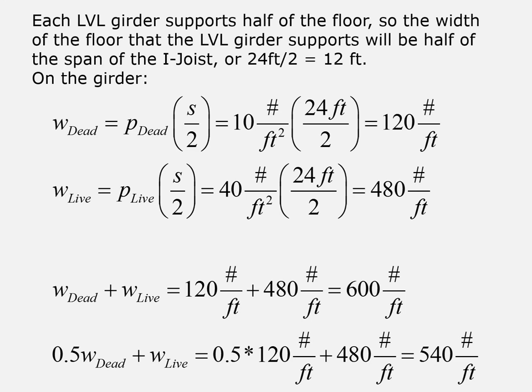And we end up with w_dead = 120 pounds per foot and w_live = 480 pounds per foot. Now in our equations for shear and for moment we need the total load w_dead plus w_live, and then for deflection we need half of w_dead plus w_live. So w_dead plus w_live is 120 plus 480 which comes out to be 600 pounds per foot and then to get the appropriate load information for deflection calculations we're going to take 0.5 times this 120 pounds per foot plus the full live load and that gives us 540 pounds per foot.